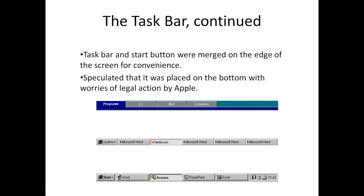It was also speculated that the taskbar was placed on the bottom of the screen instead of the top due to worries of legal action by Apple, because it did look somewhat similar to Apple's top menu. Here you can see some of the earlier concepts Microsoft was running with — the start button and taskbar are quite a bit taller. On that small screen, every pixel mattered. You can also see the famous 'System' button, and they had already added the clock and small icons for things like printer status and battery status.